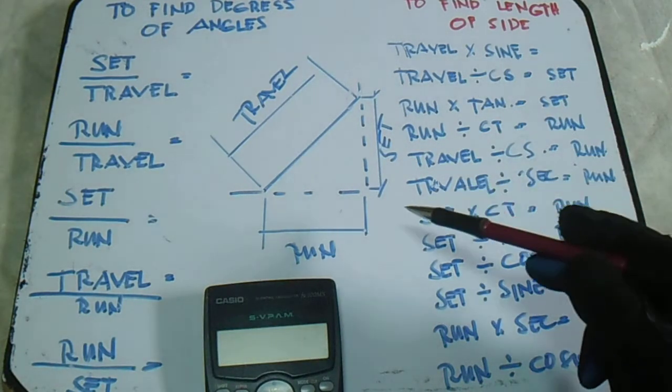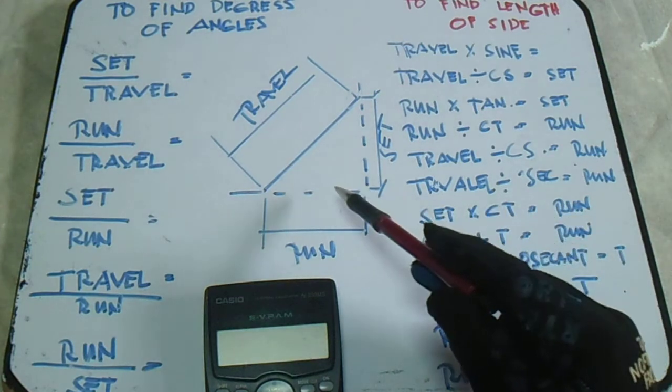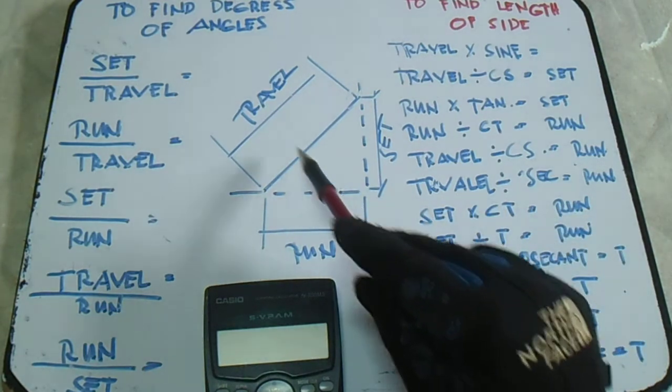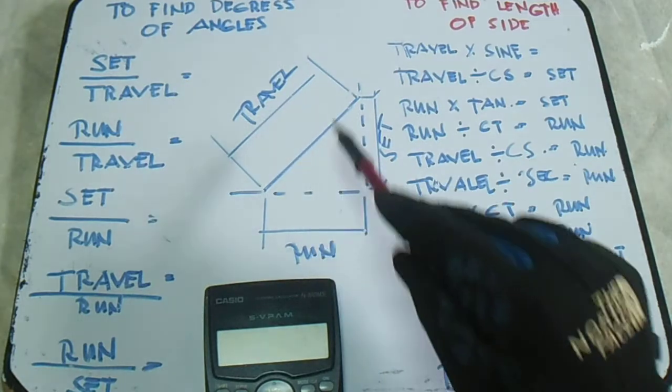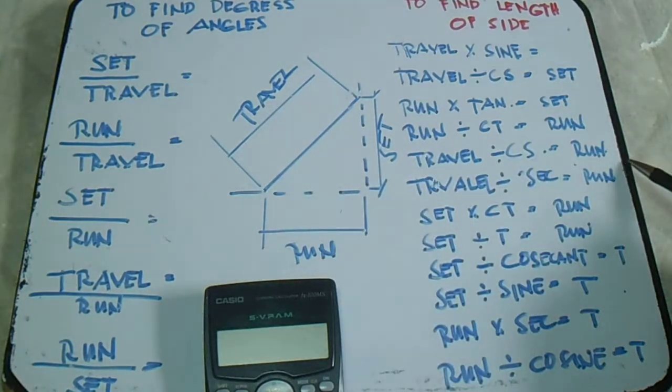Next, this is to find the length of side. So if we have degrees, we will find the length set, run, or travel.